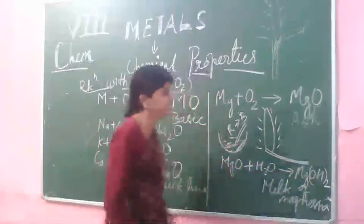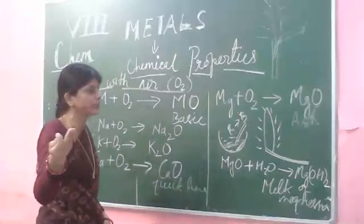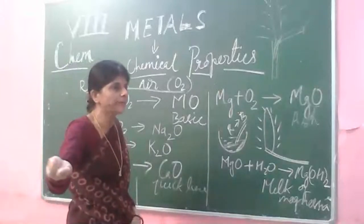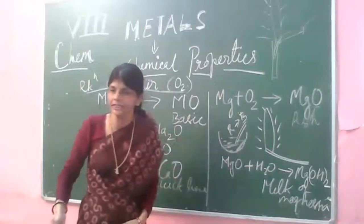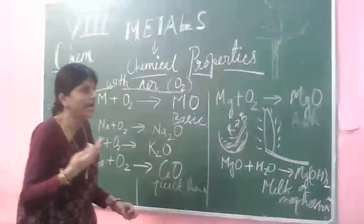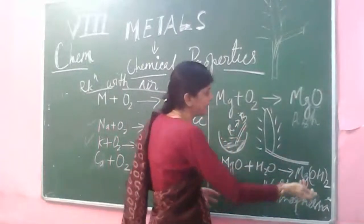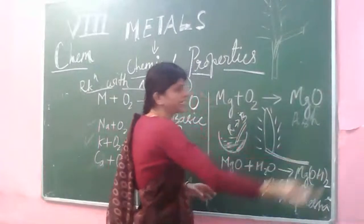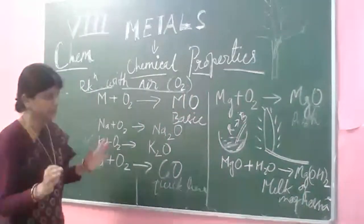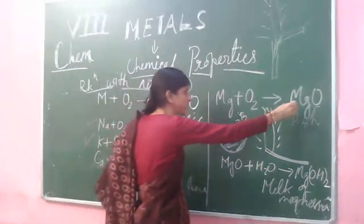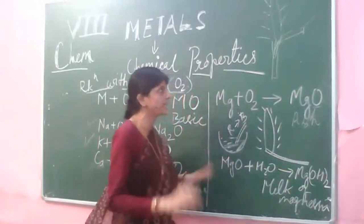Magnesium hydroxide is a base. You are using this base in so many places in your daily life — when you brush your teeth in the morning, the toothpaste contains this base. When you take an antacid to quench your acidity, that is magnesium hydroxide. So magnesium hydroxide is a base, whereas magnesium oxide was a basic substance.